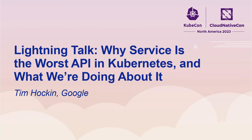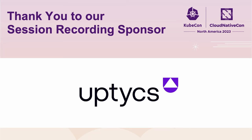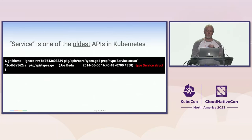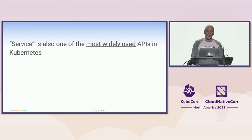Hi there. I'm glad to be home in Chicago. I want to talk today about service. Service is one of the oldest APIs in all of Kubernetes. In fact, it was in the very first public commit in Kubernetes — it existed as an API in 2014. So, almost 10 years. Service is also one of the most widely used APIs in Kubernetes.